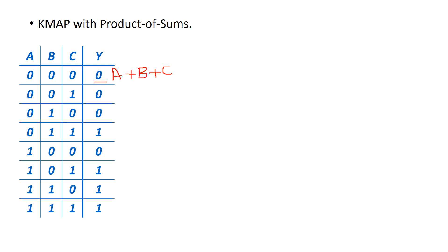In the case of the max term, it's exactly the opposite. First, we're searching for output equal to 0. Then we write the variable: if the input is 0, we write the variable as-is; if it's a 1, we write the opposite of that variable — a bar over it. So for this particular example, output Y is equal to 0 because A is 0, B is 0, and C is 0, so we write that as A OR B OR NOT C.